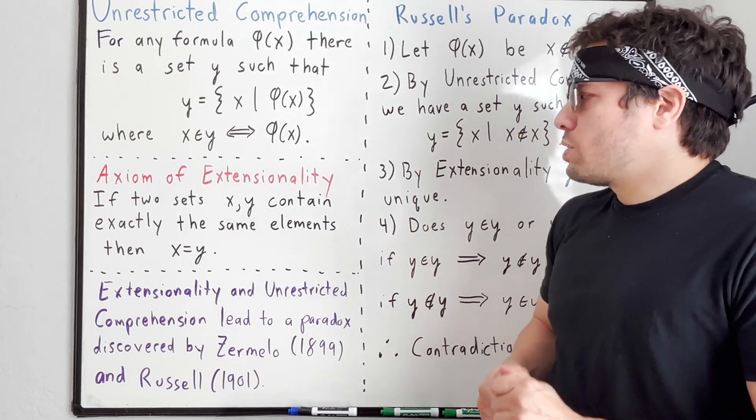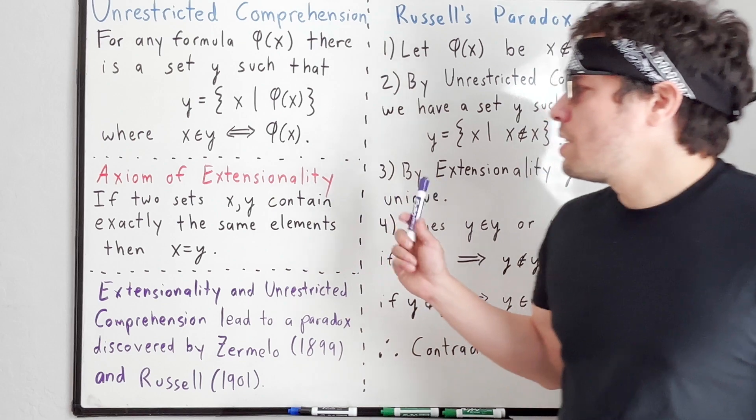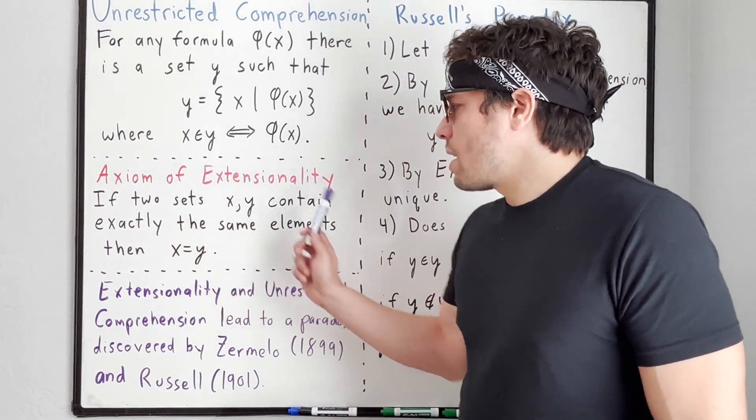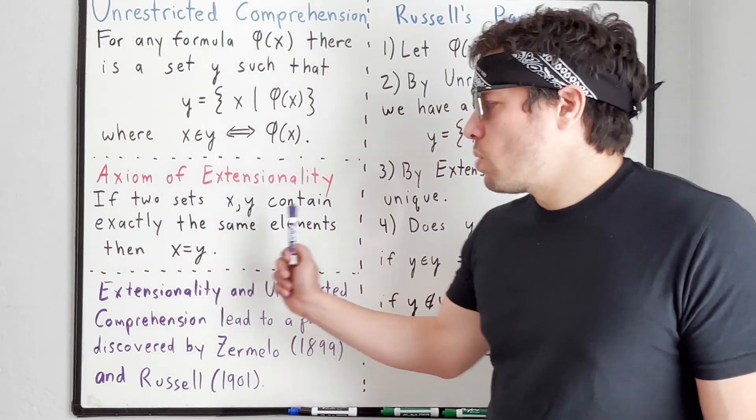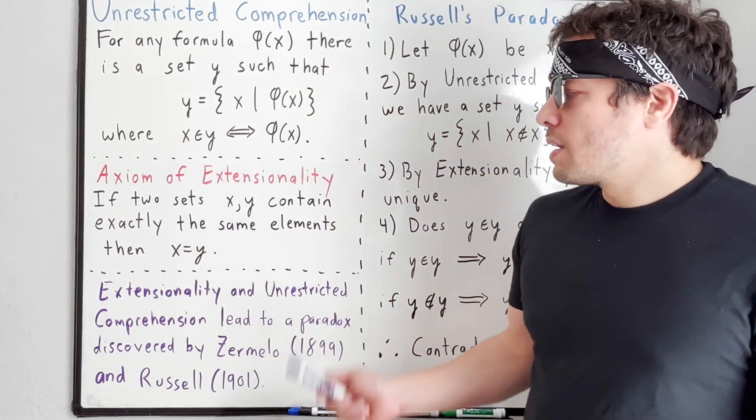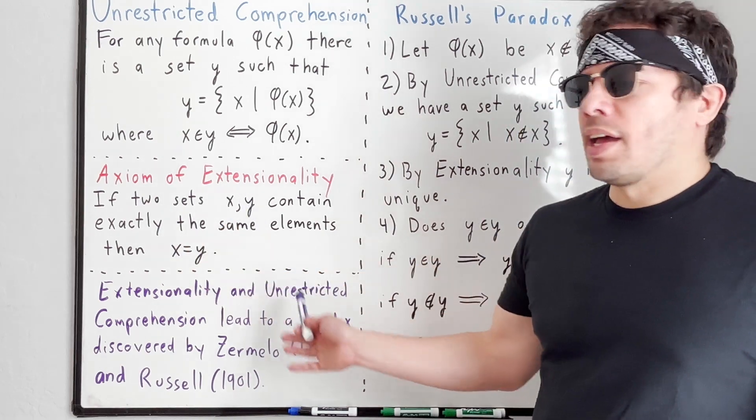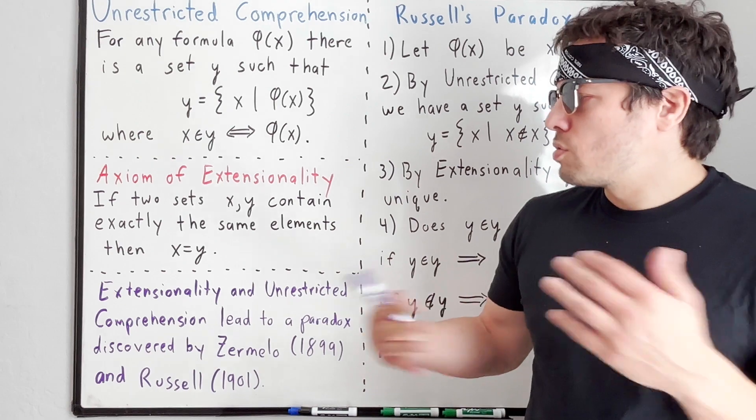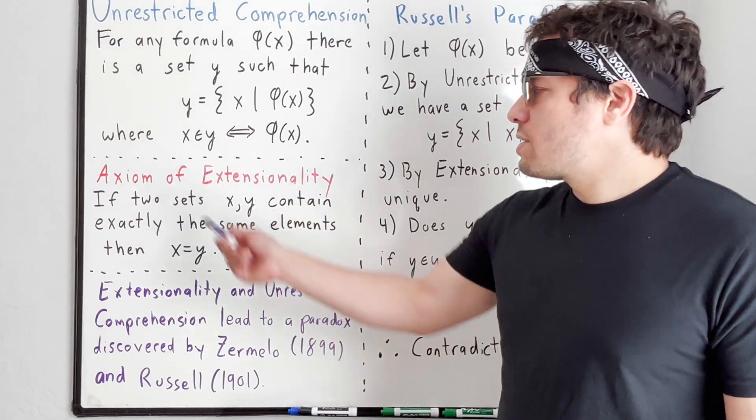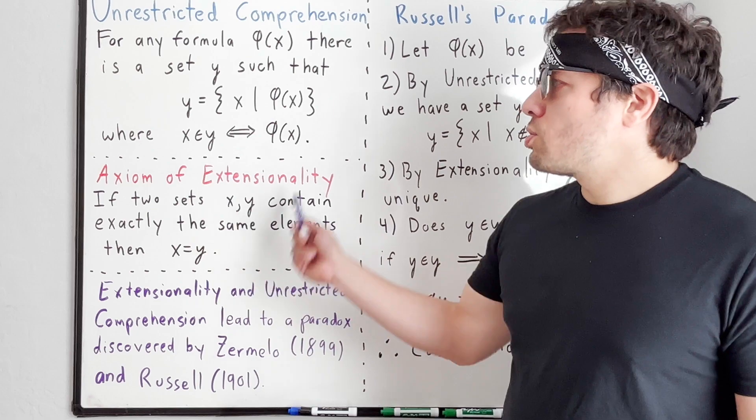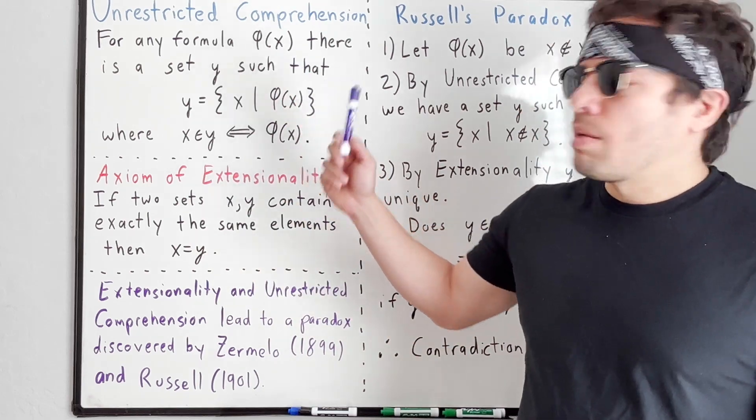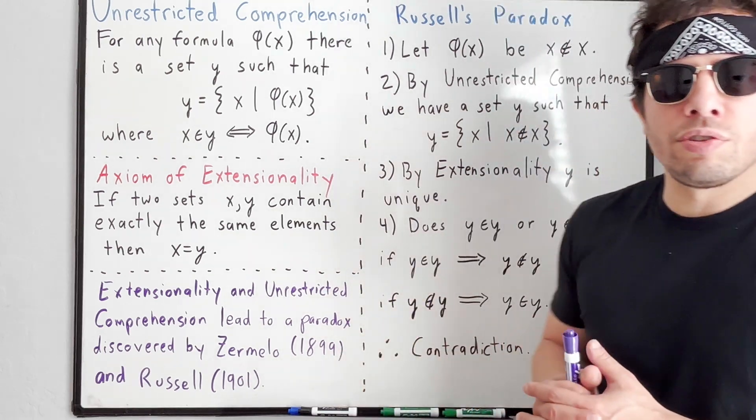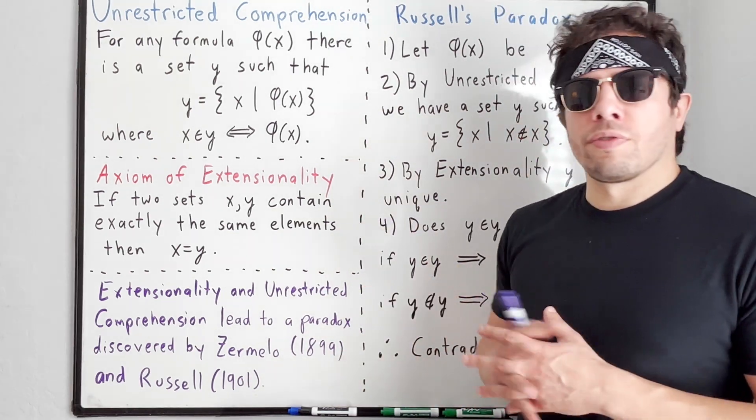In addition to unrestricted comprehension, we have the axiom of extensionality. If two sets x and y contain exactly the same elements, then x equals y. Clearly, if x equals y, then x and y contain exactly the same elements. So this is for the other direction. Extensionality makes sure that those sets defined by comprehension end up being unique.